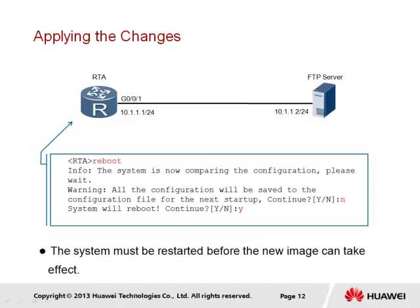When it has been confirmed that the correct VRP image has been configured for the next restart, the device should be restarted to allow all changes to take effect. The system must be in user view to perform the reboot, for which the command 'reboot' is used. The device will not reboot until any configuration changes have been saved or discarded. The prompt mentions that all configuration will be saved to the configuration file as part of the reboot process. If changes are not to be saved, choose the N option; otherwise configuration will be saved before reboot. If unsure, the 'compare configuration' command can be used, followed by confirming the reboot prompt to allow the new image to take effect.